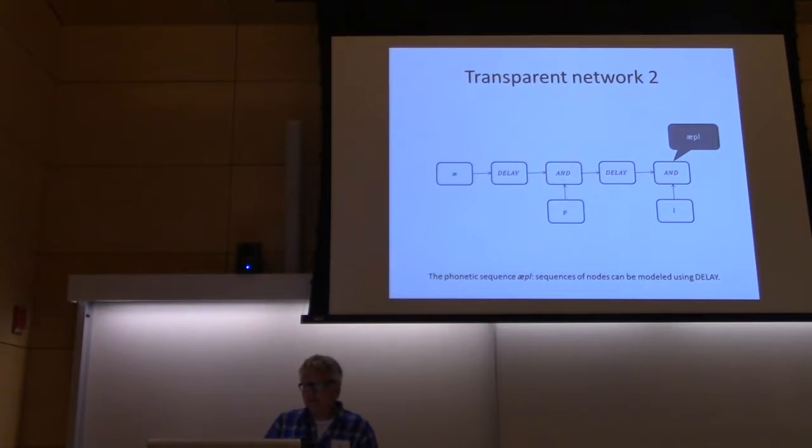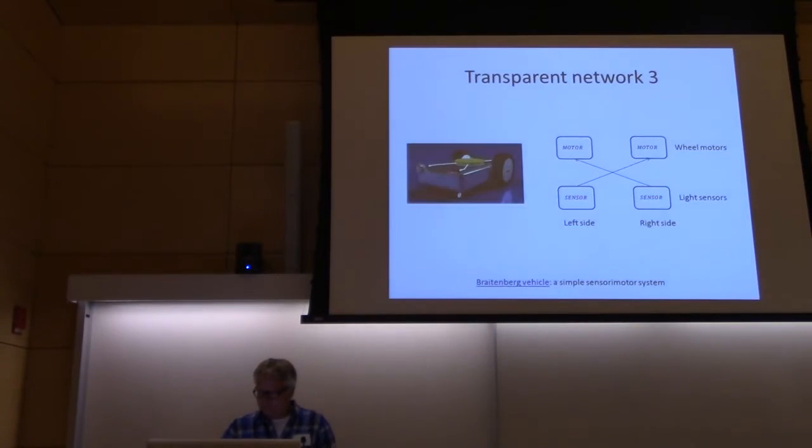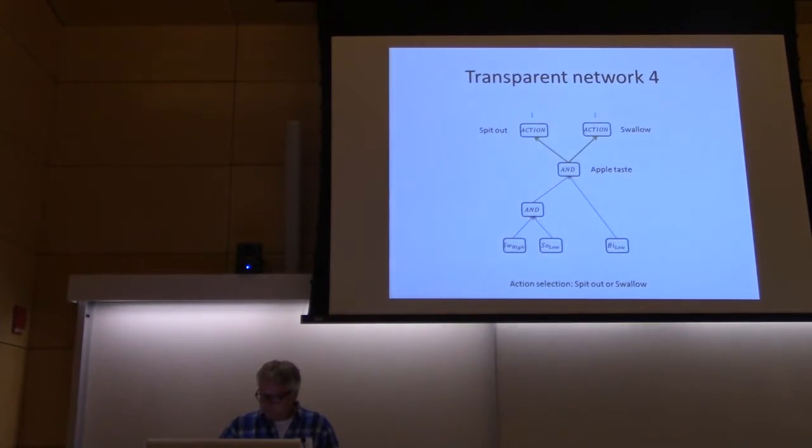Here's another one, this is how we represent sequences. We use special nodes called delay nodes. The right top node will fire if the sequence apple has been received. We also have motors as in this simple Braitenberg vehicle where the sensors connect directly to the motors. Here's another thing with the apple taste network again. Once the apple taste network gets activated we can choose between two different actions, for example spit out or swallow.